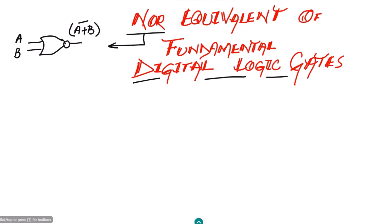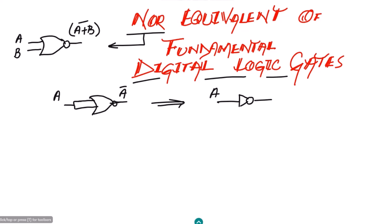Initially, if I take a NOR gate with its two inputs shorted together and apply a single input A, what I will get at the output is A complement. We can very easily see that this is the functionality of a very fundamental gate — the inverter. This is the NOR gate configured as a NOT gate.